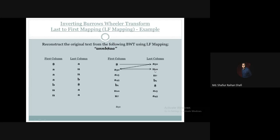The last column here is N10. We have our original text being built, and we repeat this process. N10 in the last column maps to N10 in the first column. The last column of that row is A15. So we write A15. We keep prepending characters. The last column is A15, the first column is also A15.